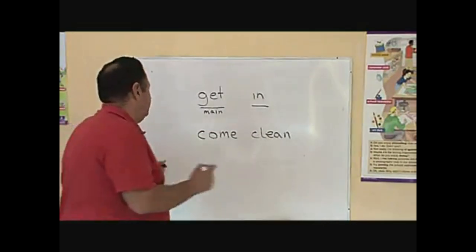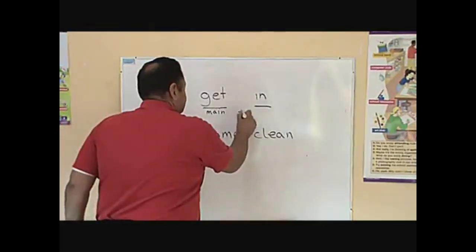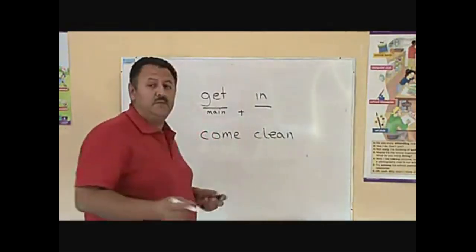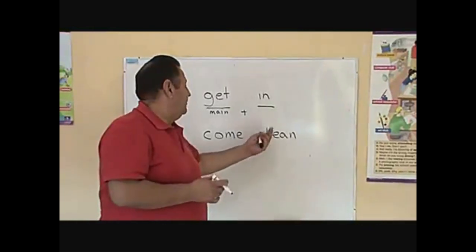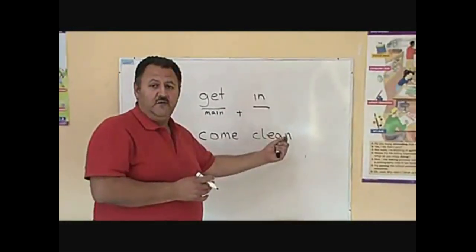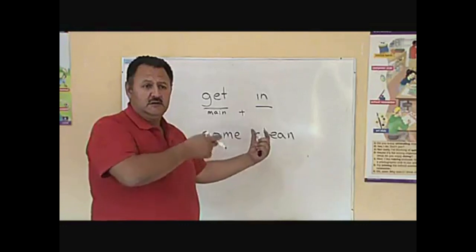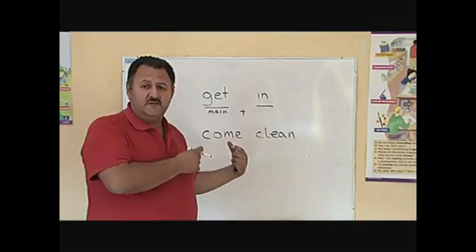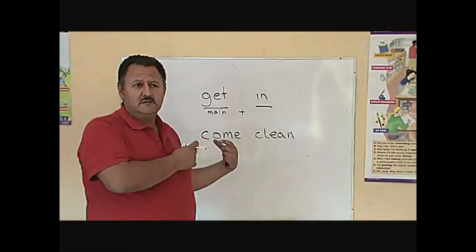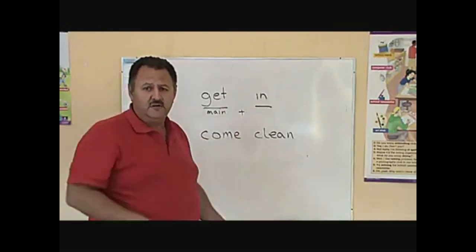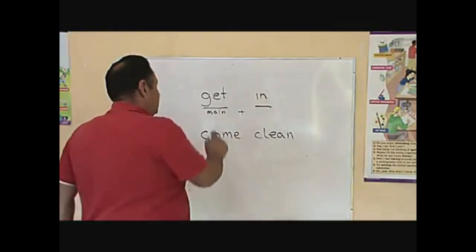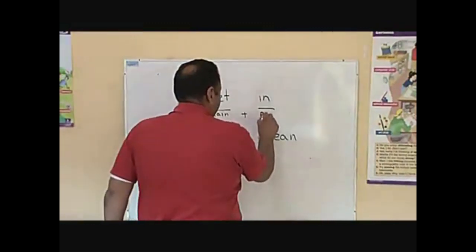So a main verb plus an adverb or a preposition. Now, when an adverb and a preposition are part of a phrasal verb, they are considered a particle. So it's a main verb plus a particle.